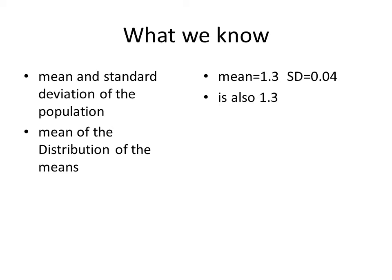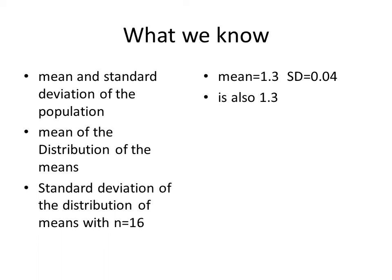What is the standard deviation of the distribution of means when their sample size is 16? There's a formula for that. Notice we're taking the standard deviation of the population and dividing it by the square root of your sample size, square root of 16. So you're basically taking 0.04 and dividing it by 4. Your answer is 0.01.